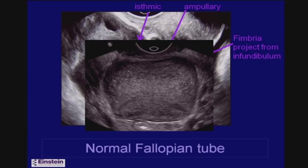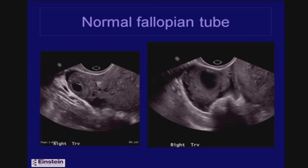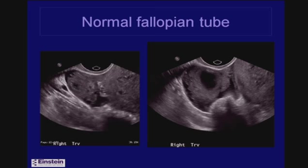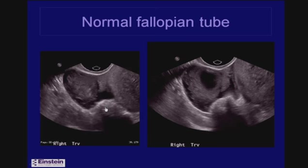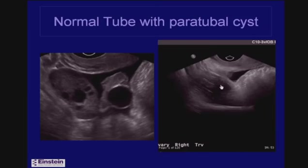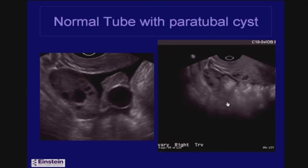The portions within the uterus are a bit more difficult to see, but sometimes you can visualize where the interstitial portion of the fallopian tubes are within the myometrium, particularly if you follow the endometrium toward that point. The cine clip on the right shows the ovary, and next to it you can see a portion of the fallopian tube, including the floaty-looking fimbriated ends right near the ovary.